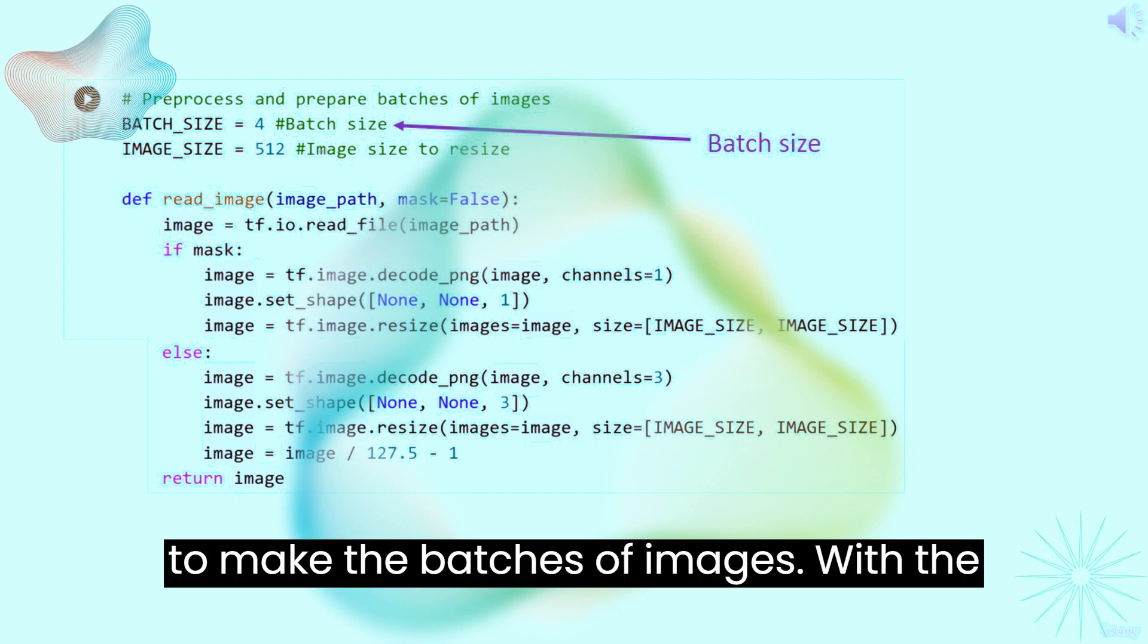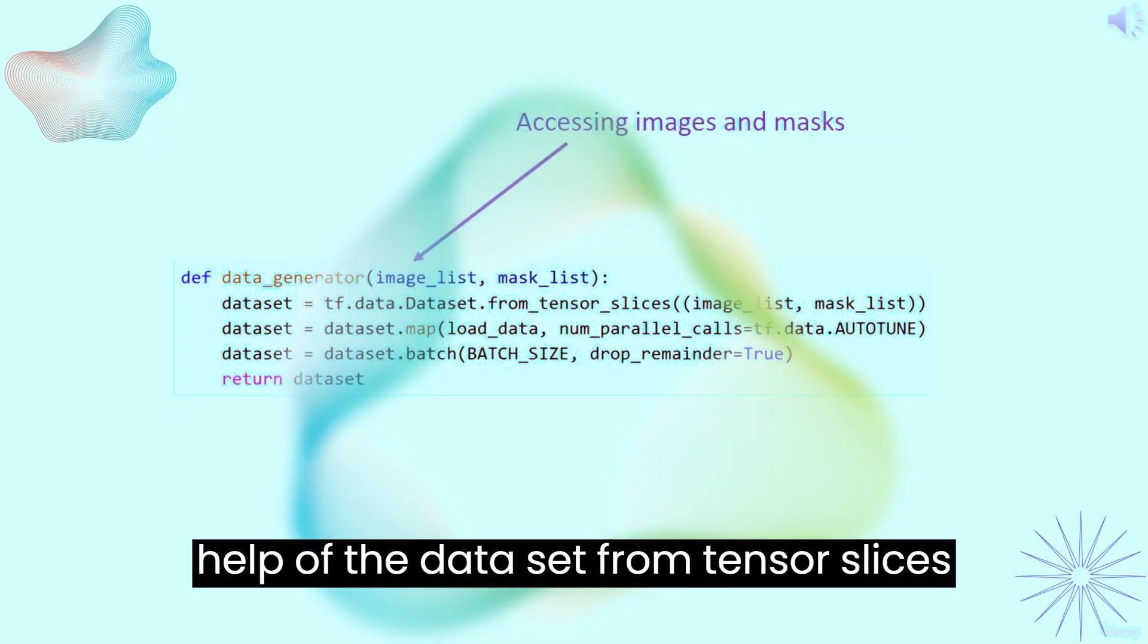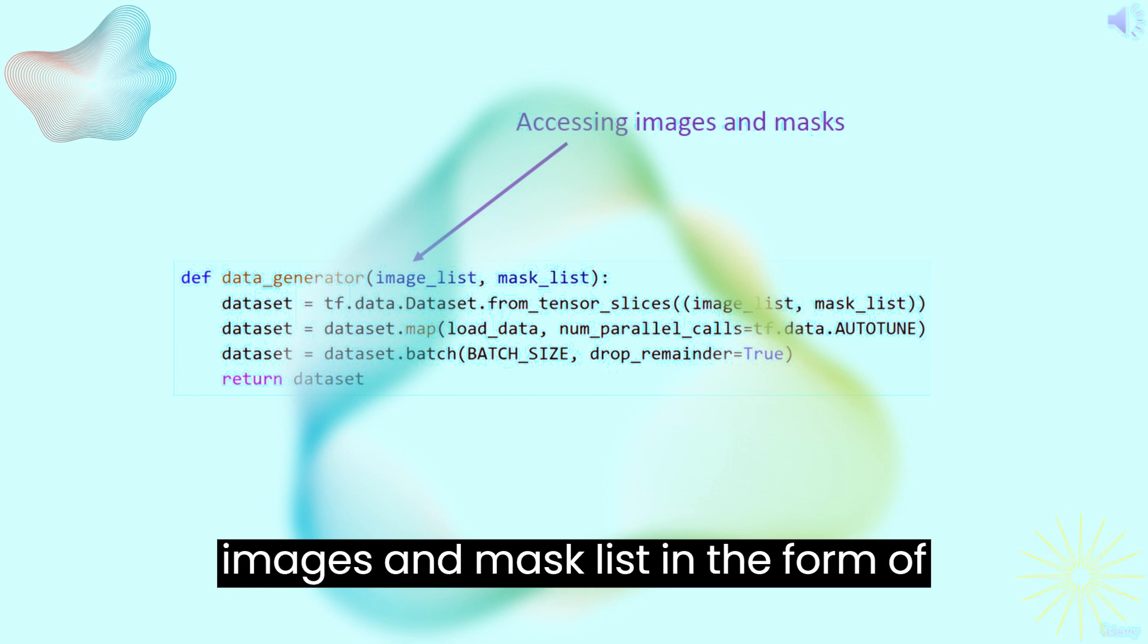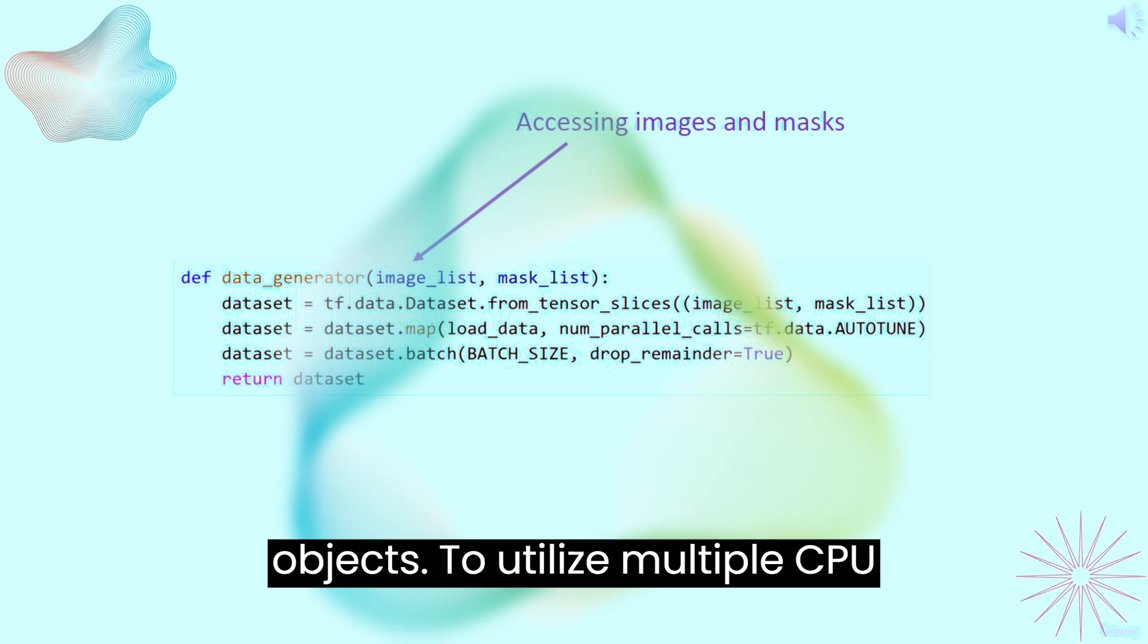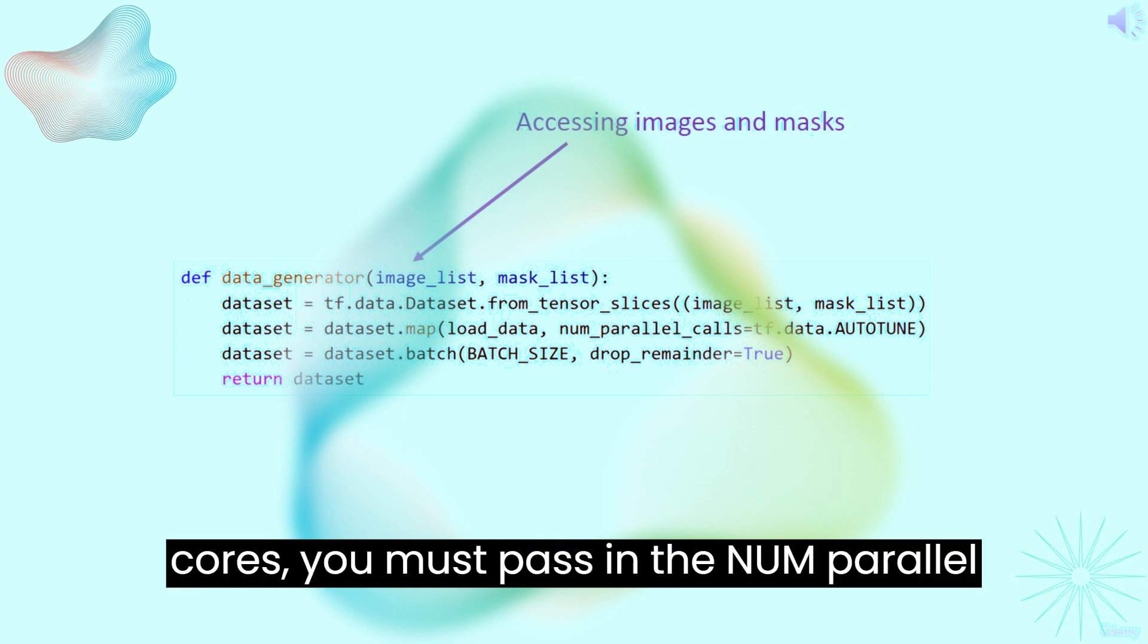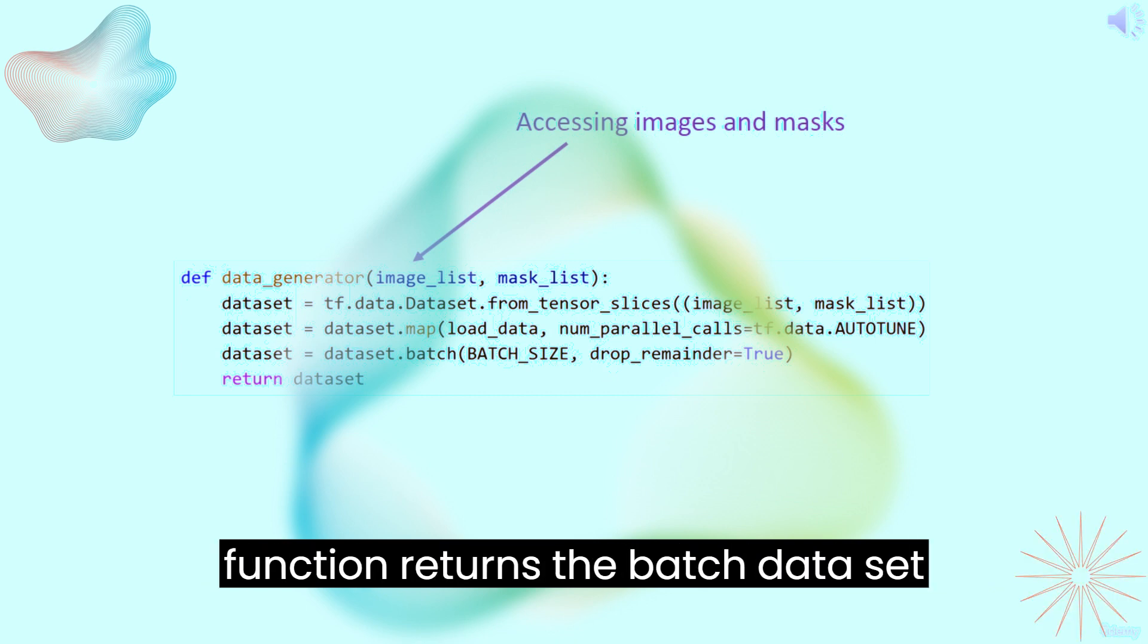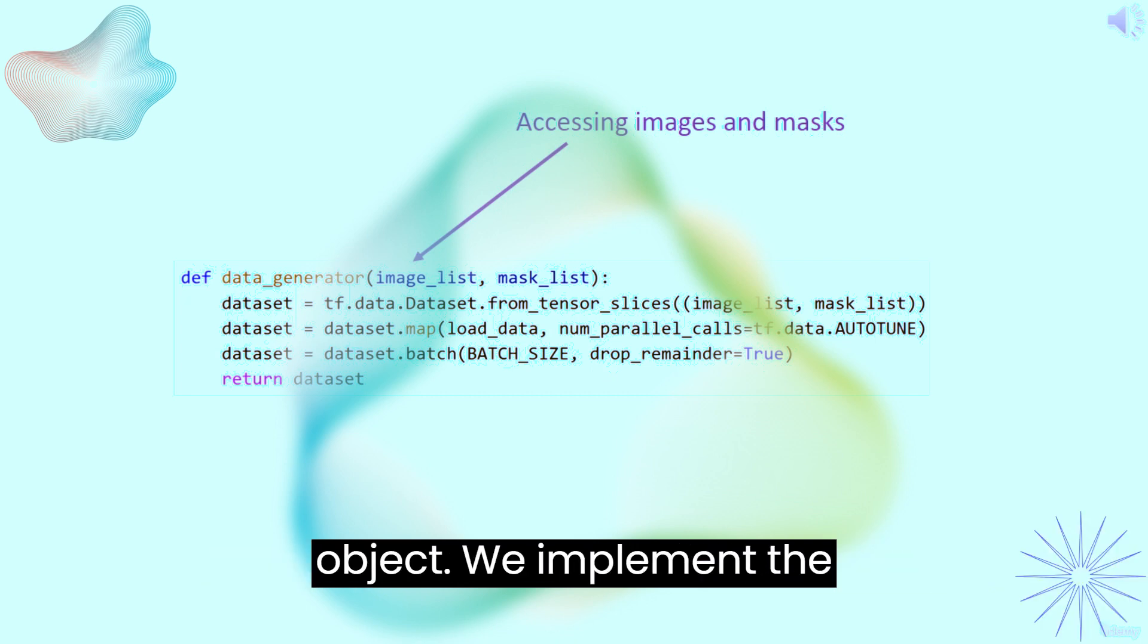To make the batches of images, with the help of the dataset from_tensor_slices method, we can get the slices of the images and mask list in the form of objects. To utilize multiple CPU cores, you must pass in the NUM_PARALLEL_CALLS argument to specify the level of parallelism you want. At last, the function returns the batch dataset object.